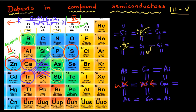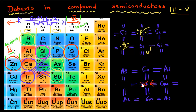Now let me ask another interesting question: what would happen if I introduce silicon into my gallium arsenide lattice? The key question is: where does the silicon go — does it replace a gallium atom, or does it replace an arsenic atom? And why is that important?